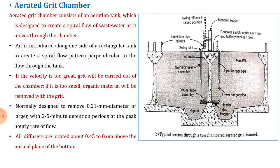An aluminium pipe railing is also provided. Concrete saddle under each tee and halfway between the tees is also provided. If velocity is too great, grit will be carried out of the chamber; if it is too small, organic material will be removed with the grit. The chamber is normally designed to remove 0.21 mm diameter or larger particles with a 2 to 5 minute detention period at peak hourly flow rate. Air diffusers are located about 0.45 to 0.6 meters above the normal plane of the bottom.